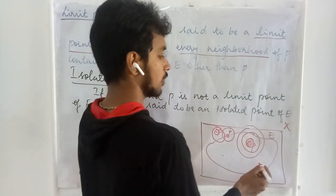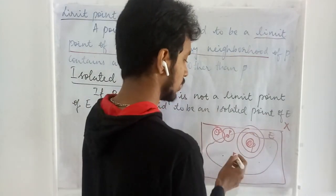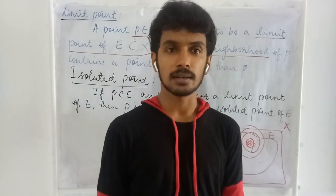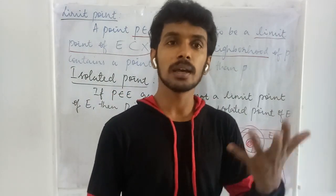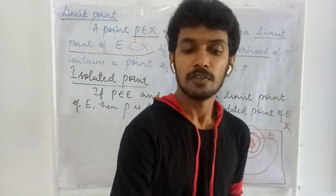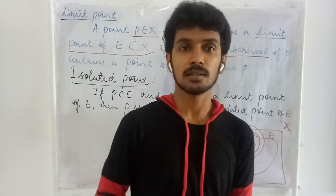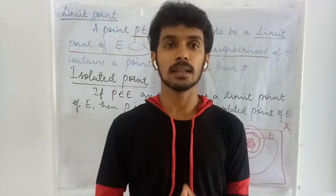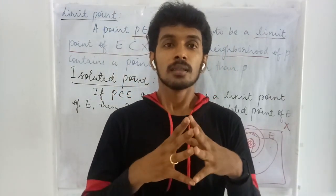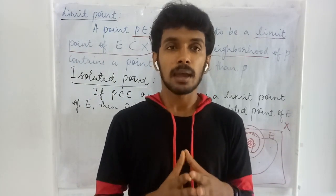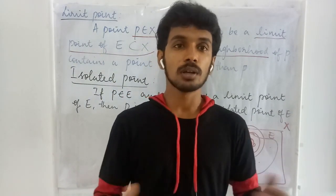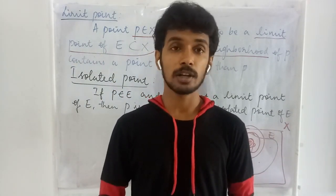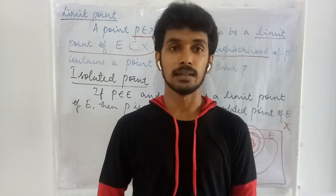If I choose a point here, in all these cases, I get this to be a limit point of E. From the definition and from this diagram, we can see one thing: a set may have more than one limit point. Sometimes, an infinite number of limit points may also exist for a set.